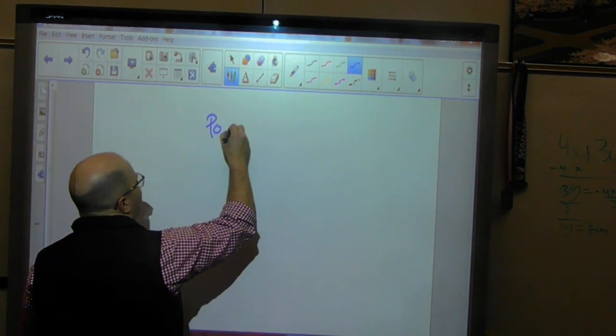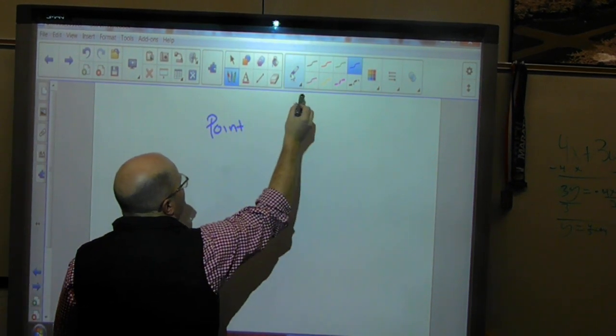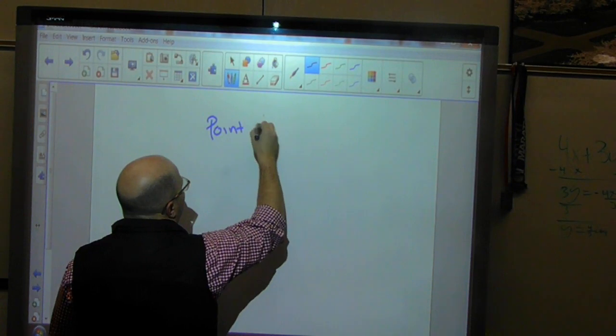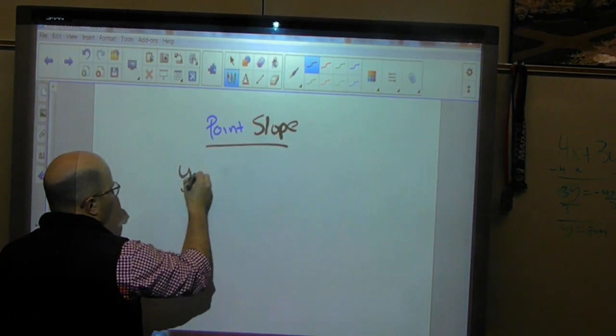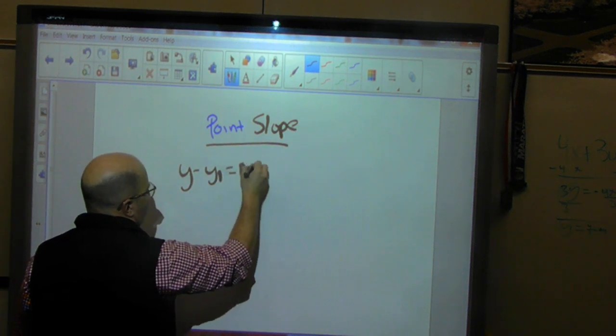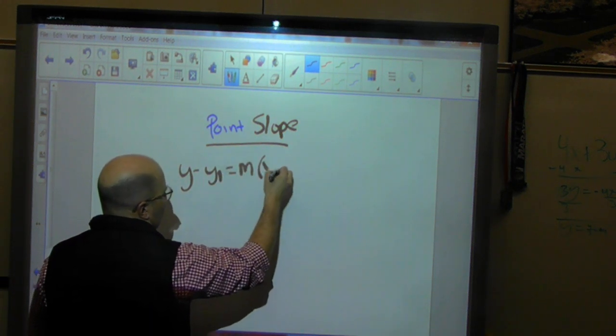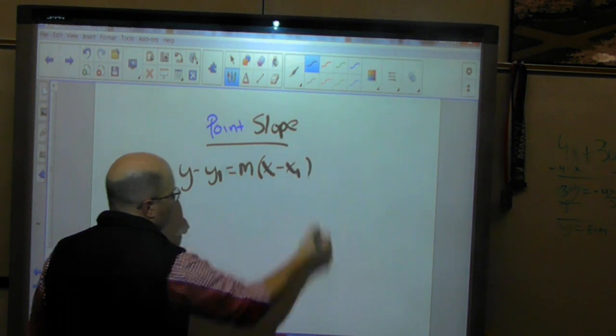Point slope is y minus y1 equals m times x minus x1, okay.